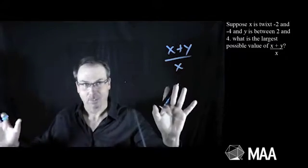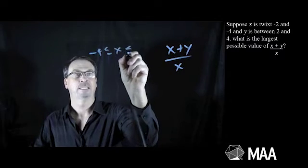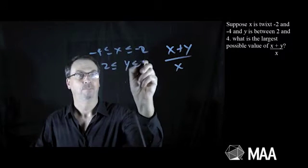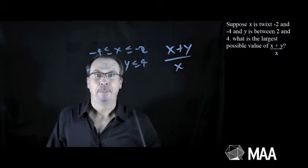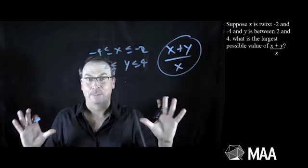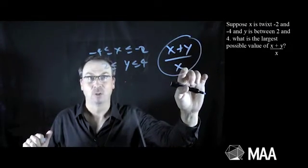Okay, I feel I can handle this. x is between negative 2 and negative 4, so negative 4 is less than or equal to x is less than negative 2, and y is between 2 and 4. Alright. I want to make this as big as possible. Well, normally the way to make a fraction big is make the numerator as big as possible and the denominator as small as possible. But the denominator is x, which is always negative.